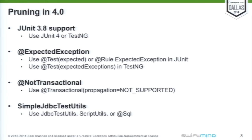Some of the pruning, more explicitly for testing support: we got rid of the JUnit 3.8 support completely — the legacy stuff is also gone, and also the Spring test context framework JUnit 3.8 support is gone. So basically, you should be using JUnit 4 and TestNG from now on. We also got rid of things like addExpectedException in favor of using the features from the testing framework. If you're using JUnit, you should be migrating to test expected or the expected exception rule from JUnit. With TestNG, you should be using the expected exceptions feature with the test annotation.